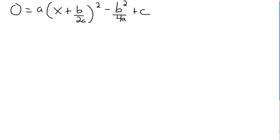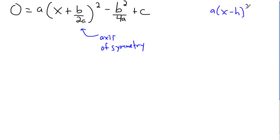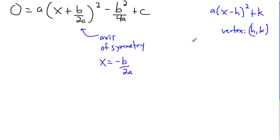Now that it's factored, we can identify some interesting things. Comparing to vertex form — a times (x minus h) squared plus k — the x value of the vertex is negative b over 2a, because what we have is plus b over 2a, so h is negative b over 2a. This is actually where the axis of symmetry comes from! And the y value of the vertex is just minus b squared over 4a plus c.